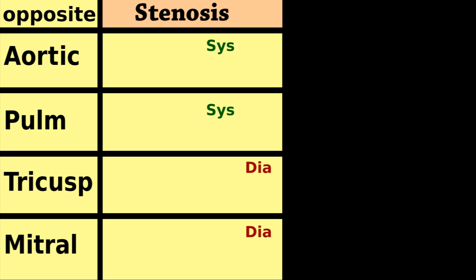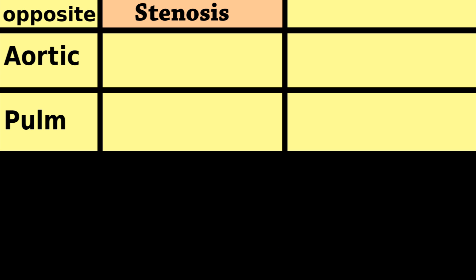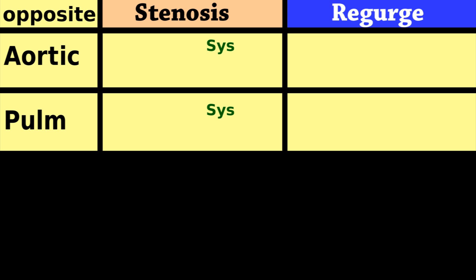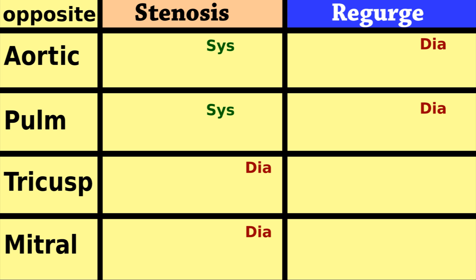Also, if superior stenosis is systole, superior regurgitation is diastole. Completing the opposite pattern fills out the full table.